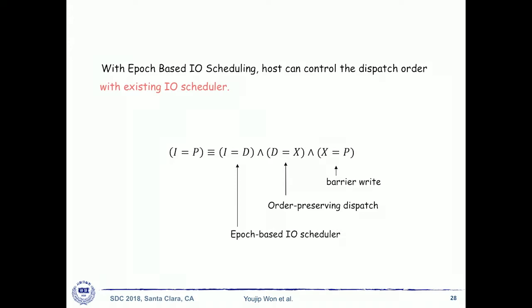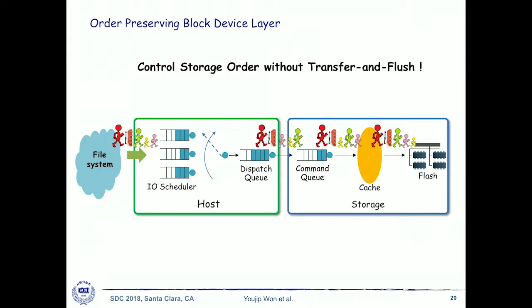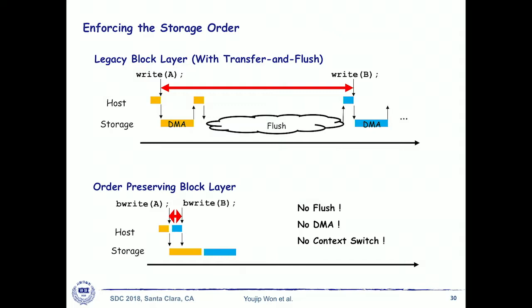With this order-preserving I/O stack and barrier-enabled storage devices, the application can control storage order without transfer-and-flush. In the legacy block layer, two requests had to be interleaved with transfer-and-flush. In the order-preserving block layer, the host controls storage order without flush, without DMA transfer overhead, without the caller being blocked, and without context switches.